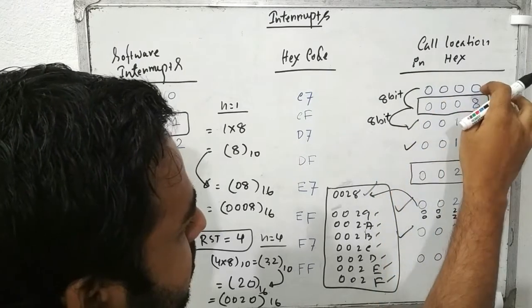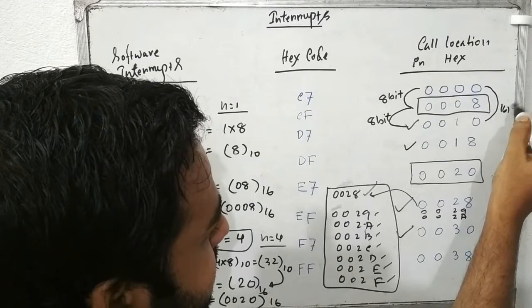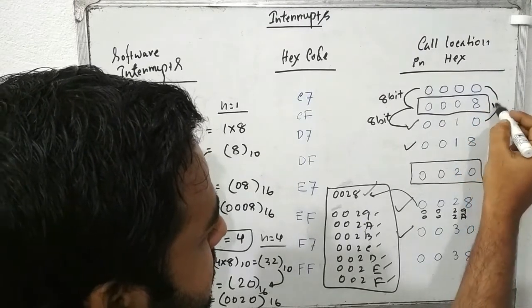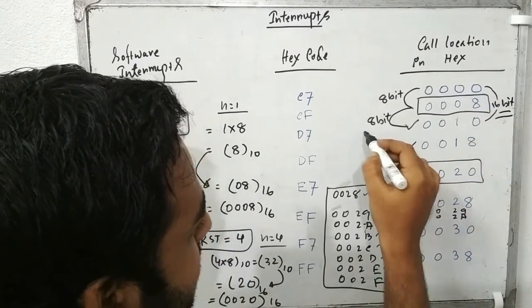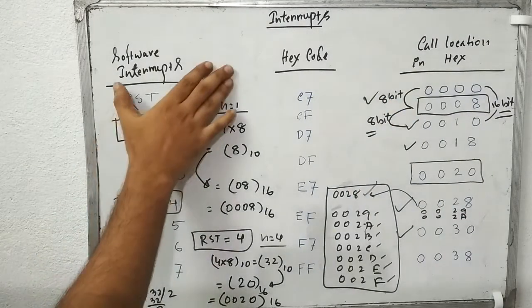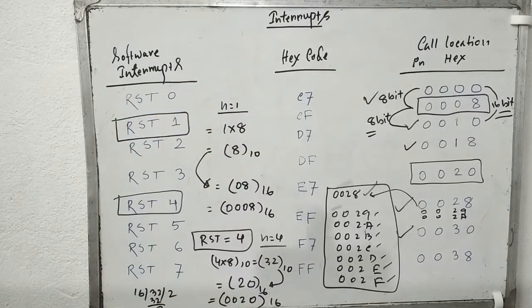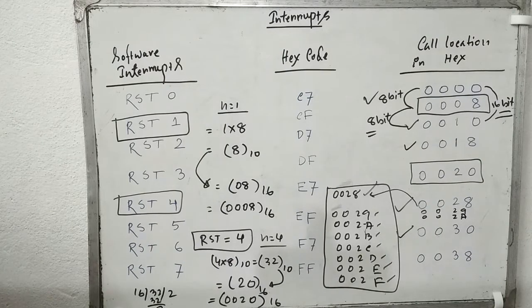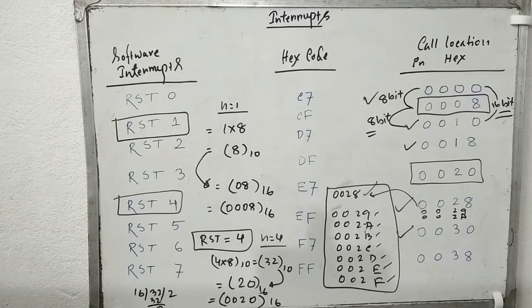Between certain interrupt pairs the gap is 16 bits. That covers the sum properties about the software interrupts and all vector interrupts. In our coming session, we will discuss how a non-vector interrupt executes in the 8085 microprocessor — which is very important for the interrupt chapter.